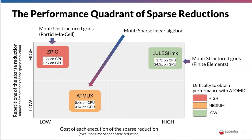We can see that the type of problem and simulation technique is reflected in different properties that determine the amount of computation or repetitions of the sparse reduction, as well as the amount of memory required. So finally, we wanted to show you what we call the performance quadrant of the sparse reduction — the first time we show this type of analysis, something we really wanted to have at the end of this course.